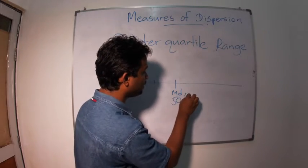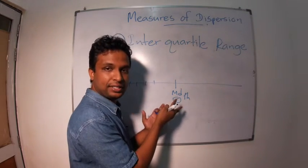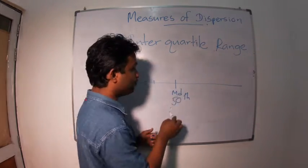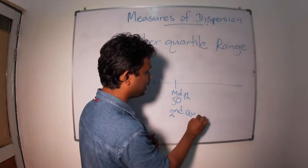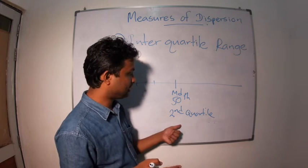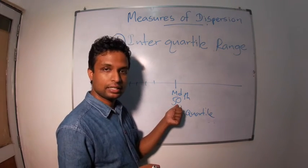So here we have 50th centile. In 50th centile we have median. We call this as 2nd quartile. In a distribution, 2nd quartile is situated in 50th centile. That is the median.